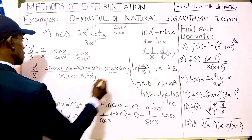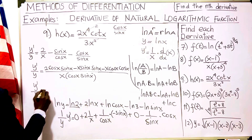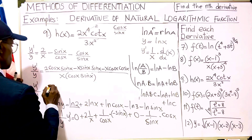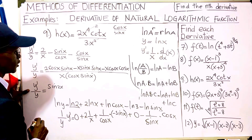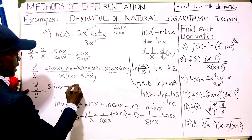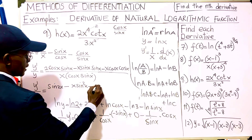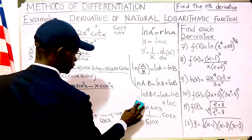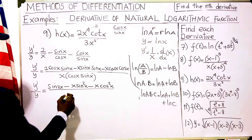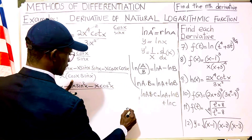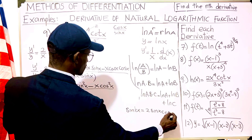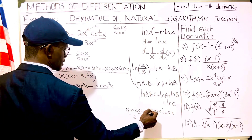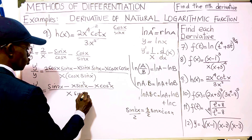We know that 2·cos(x)·sin(x) equals sin(2x). We can factor out x from the remaining terms, giving minus x·(sin²x + cos²x). Since sin²x + cos²x equals 1, we get sin(2x) minus x, all over x·sin(2x). Also, sin(x)cos(x) equals sin(2x)/2.